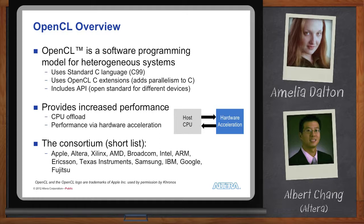OpenCL was developed by Apple in 2008 and is now managed by a large industry-wide consortium, the Khronos Group. OpenCL is a programming model for software engineers and a methodology for system architects. It uses standard C and OpenCL C — which is standard C with extensions to add parallelism — and also includes an API, a standard interface for the CPU to communicate with the hardware accelerator. OpenCL is an open standard, royalty free, and hardware platform agnostic.